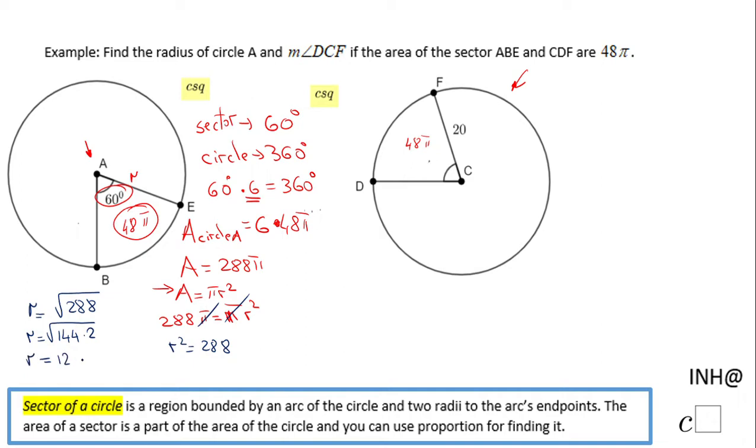So the final answer here is 12√2. This is the radius of the circle for which a sector with central angle 60 degrees is 48π. So now let's go to the second part, circle C.